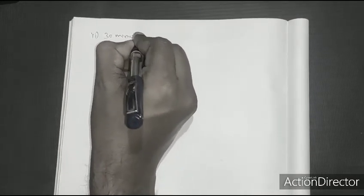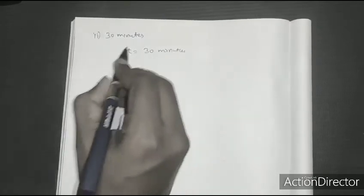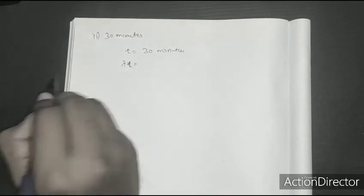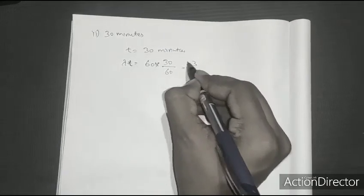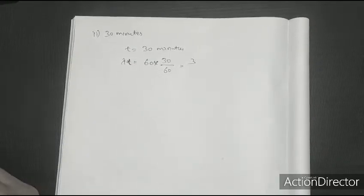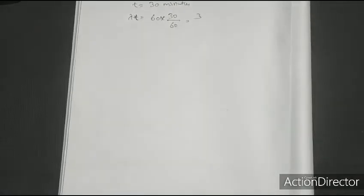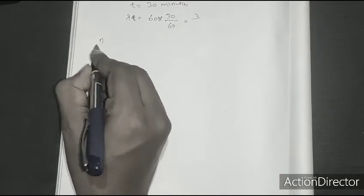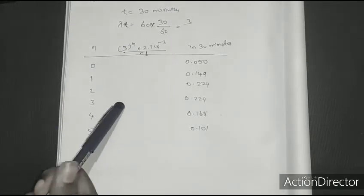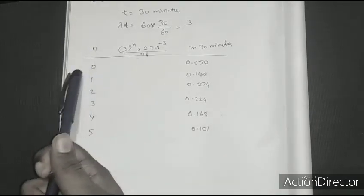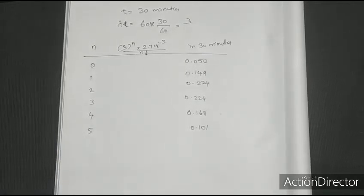Now we apply the same equation for the 30-minute interval. We use the same Poisson formula and apply it for n from 0 to 5. Substituting the updated lambda t value for 30 minutes, we calculate the probabilities accordingly.